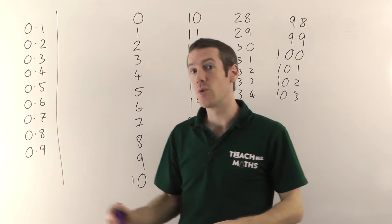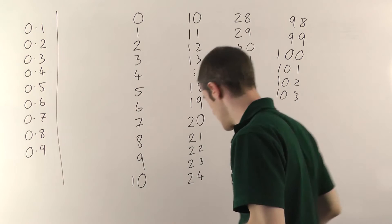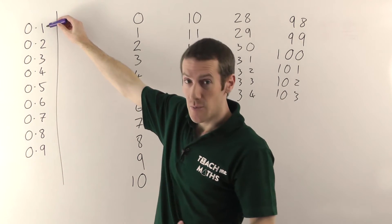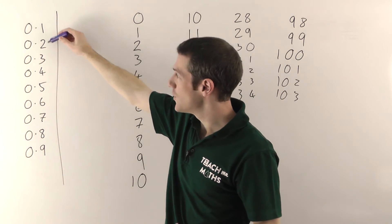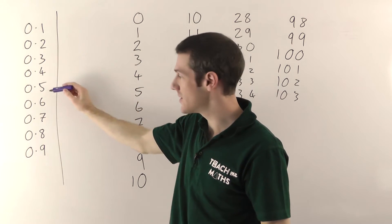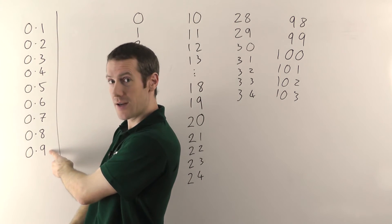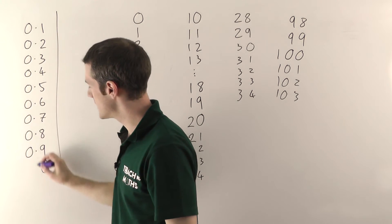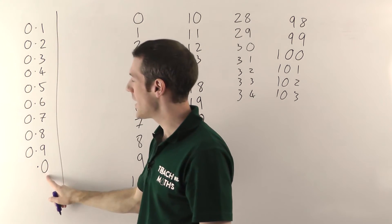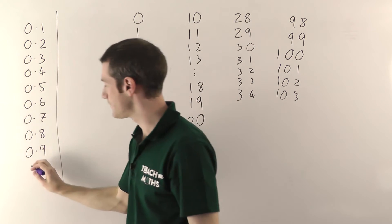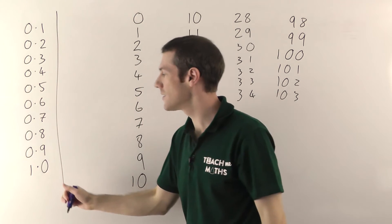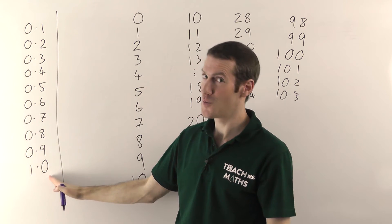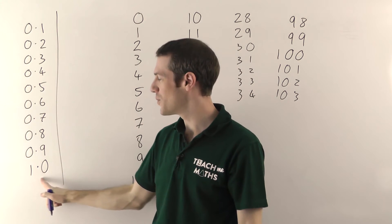With decimals, it works exactly the same. So let's have a proper look at this now. We started with 0.1, 0.2, 0.3, 0.4 — you cycle through all your symbols. When you get to a 9, it rolls over: the 9 becomes a 0. The decimal point stays there, but then you add 1 onto the next column. So the next number after 0.7, 0.8, 0.9 — it's not 0.10, it's 1.0.